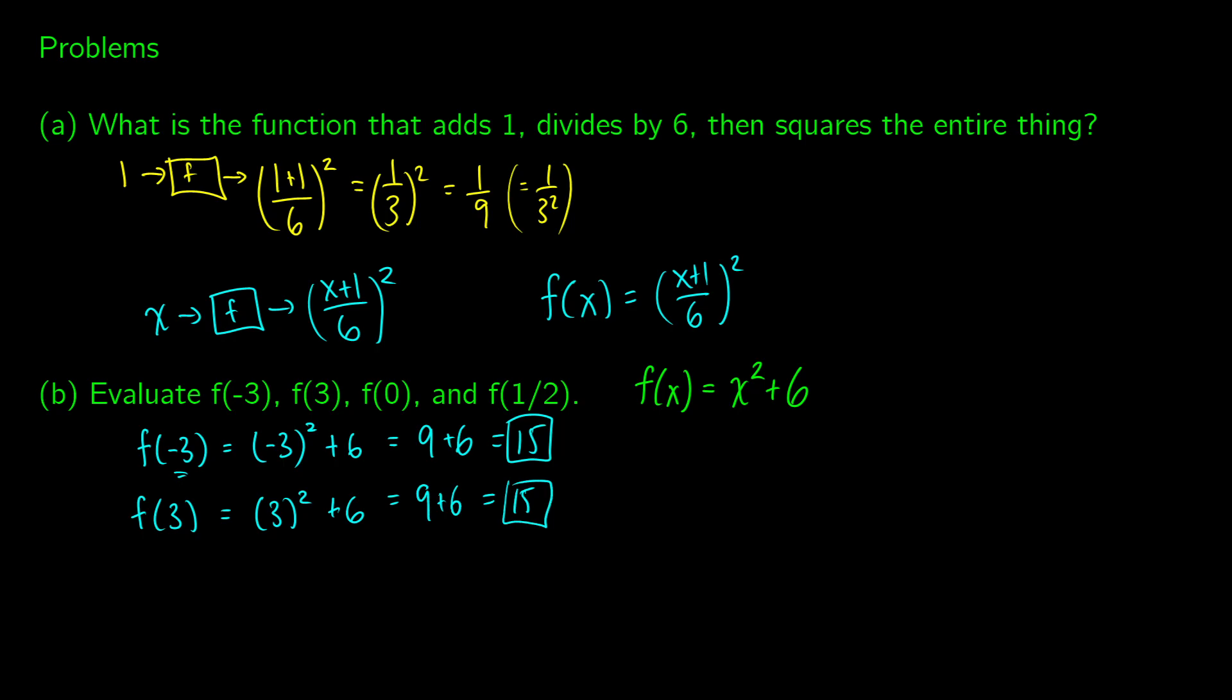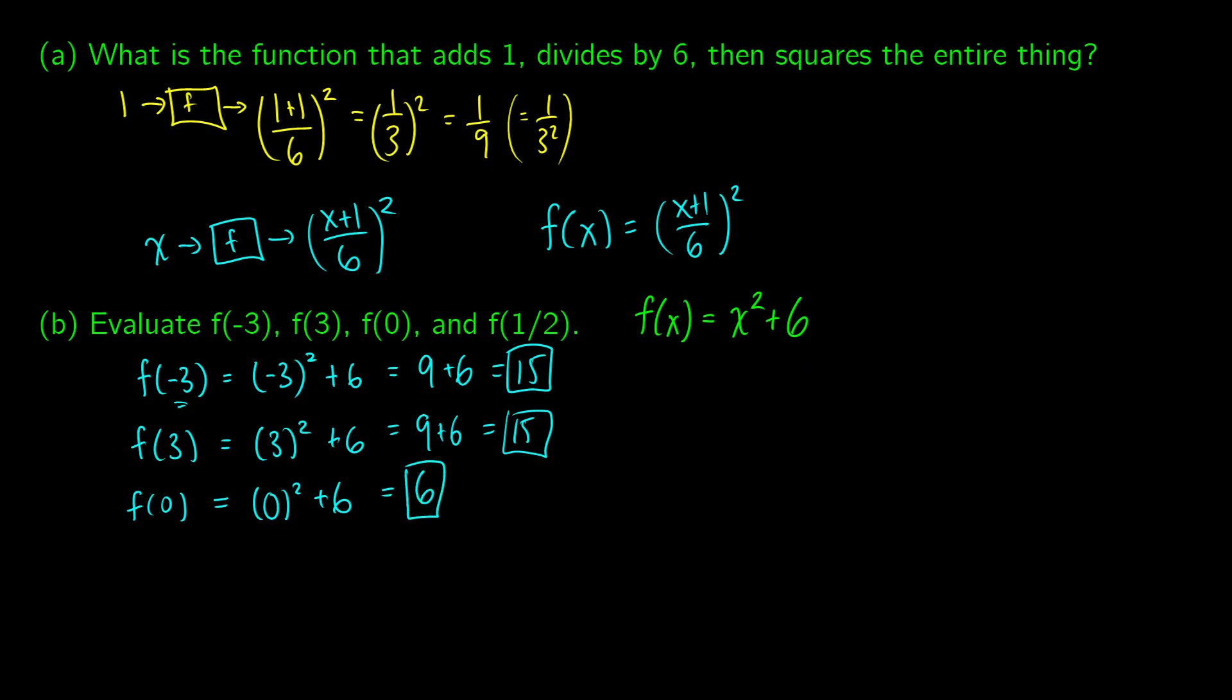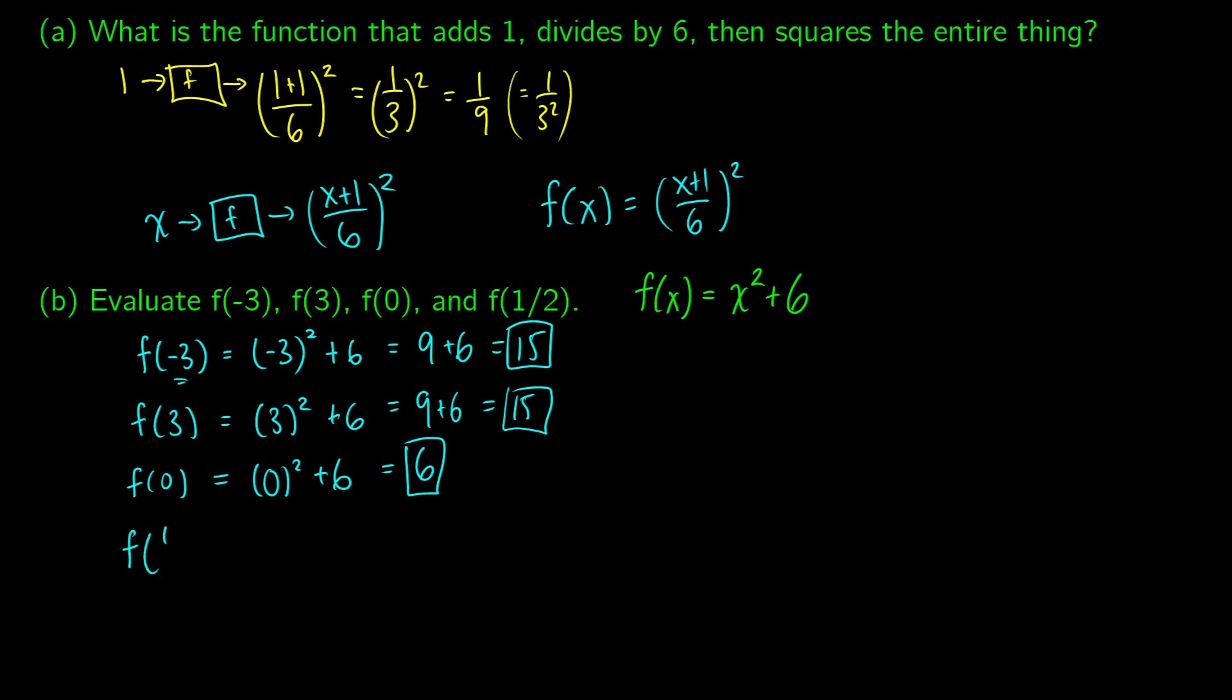If we put f(0) in, totally fine to put 0 in, we're going to get 0 squared plus 6. This is just 0 plus 6, which is 6. And now if we put in f(1/2), well the same thing applies. We're going to get (1/2) squared plus 6. This is the same thing as 1 over 2 squared plus 6, which is going to be 1/4 plus 6. If we want, we can convert 6 into a fraction, so this would be 1/4 plus, well, turning 6 into something over 4, this would have to be 6 times 4, which is 24 over 4. And our final solution would be 25 over 4.